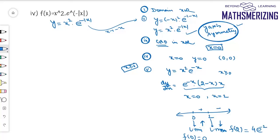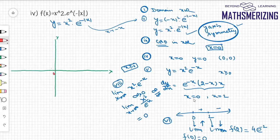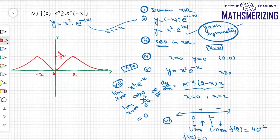For the limit: since I'm reflecting the right side onto the left, I only need to find the limit as x → ∞. The form is ∞ · e^(−∞) = ∞ · 0. Writing it as x² / eˣ, an ∞/∞ form, and applying L'Hôpital's rule twice gives the limit as 0. Drawing the graph: it starts at the origin, increases to a local maximum of 4/e² at x = 2, then decreases back to 0. By y-axis symmetry, the same shape is reflected onto x ≤ 0. That is the graph of x² · e^(−|x|).